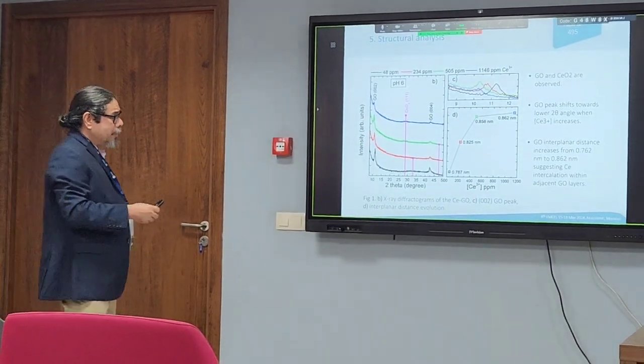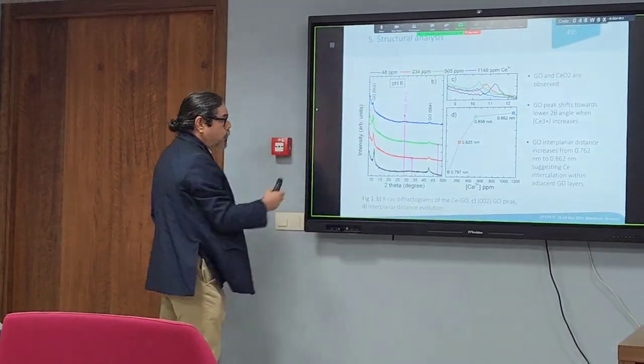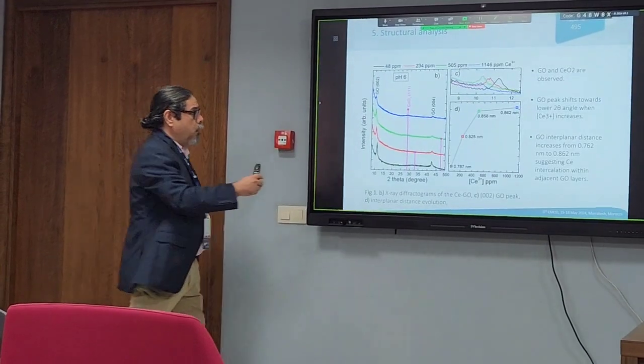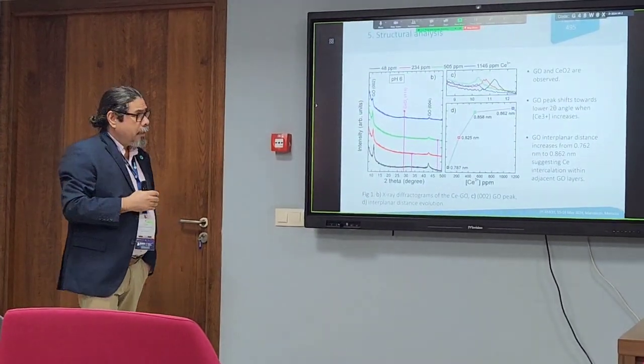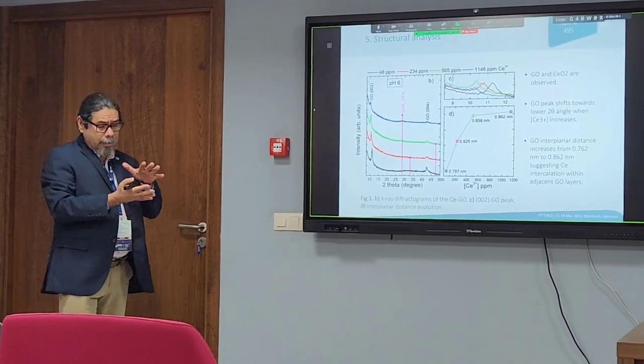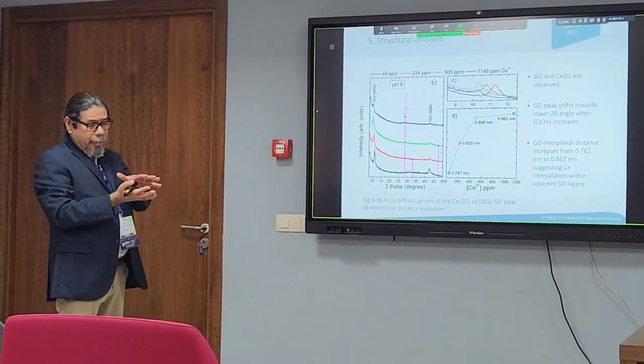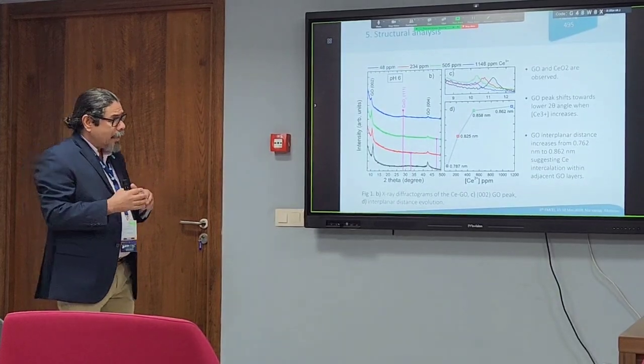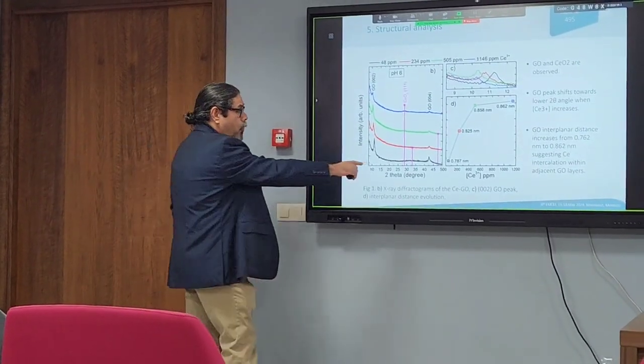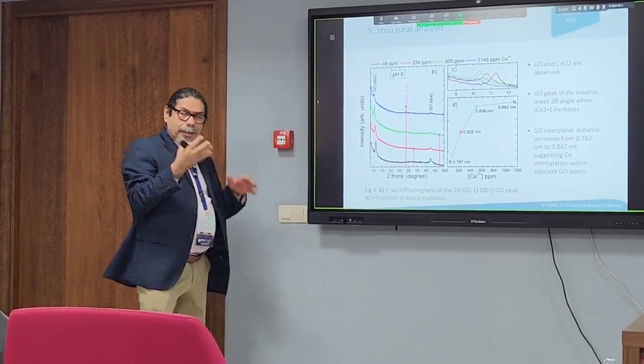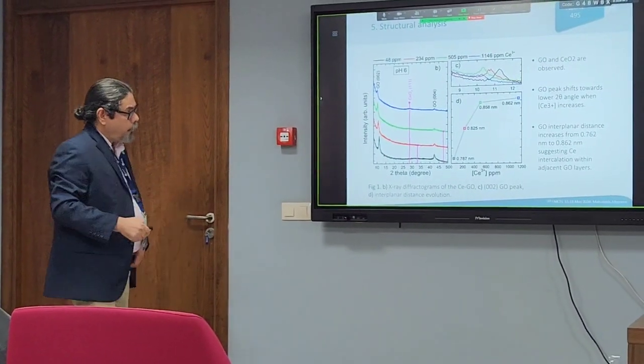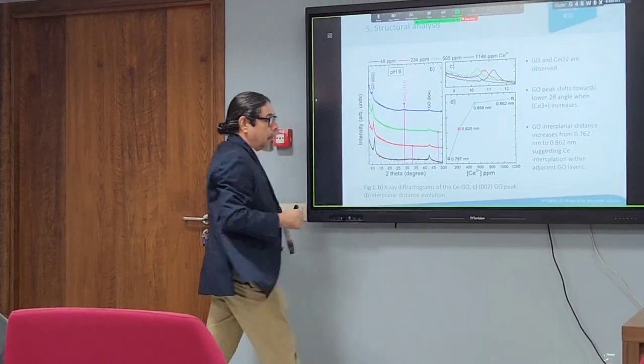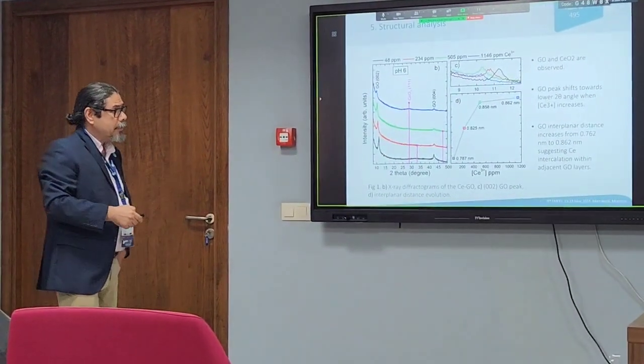By X-ray diffraction, we still observe the diffraction peak related to graphene oxide. The peak is moving towards higher diffraction angles, which indicates that the graphene oxide layers are getting more separated as cerium oxide forms and is getting intercalated between the layers. So we see the increase of the interlayer distance.